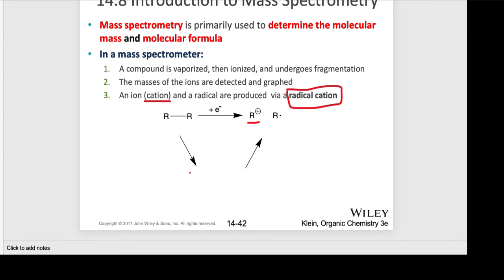So what would a radical cation look like? There's more than one way of drawing it, but basically this line here stands for two electrons, and now an electron comes in and it knocks out one of those electrons — that's where you get the positive charge. This is also explained in your textbook, and I did post a handout.